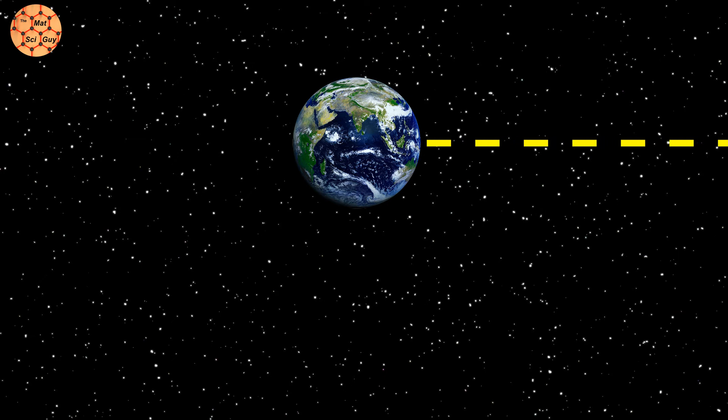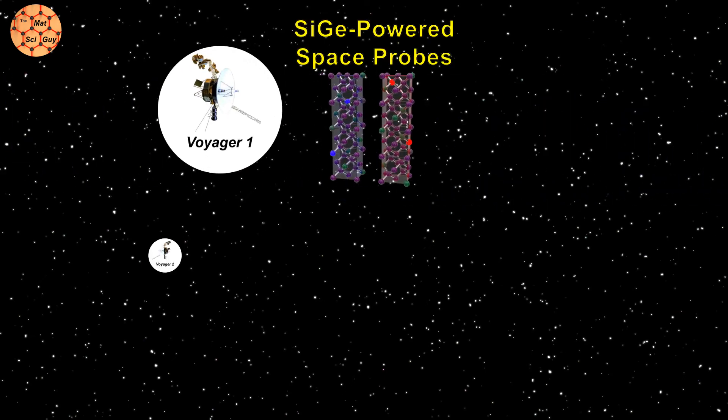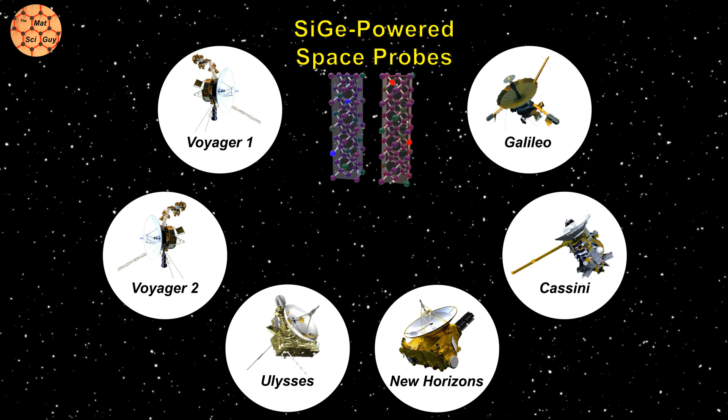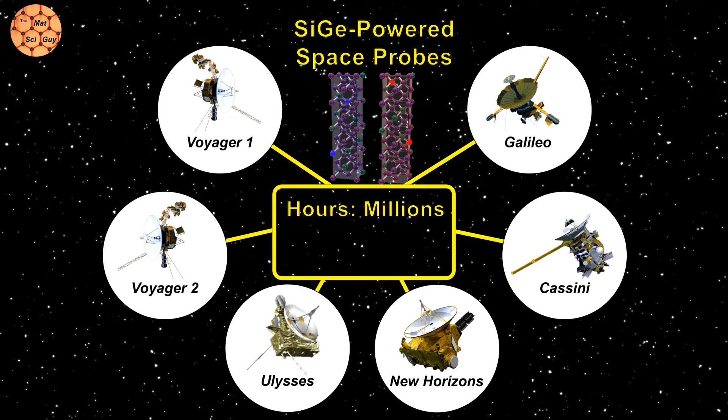The success story isn't just limited to Voyager, though, because many similar deep space probes share the same material at their heart. Combined, these silicon germanium-based radioisotope thermoelectric generators have logged 250 million device hours without failure. Silicon germanium has traveled a truly unfathomable distance into one of the harshest environments imaginable, and its performance has been literally flawless.